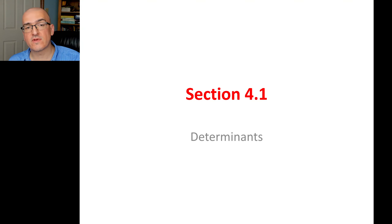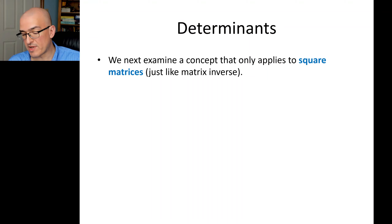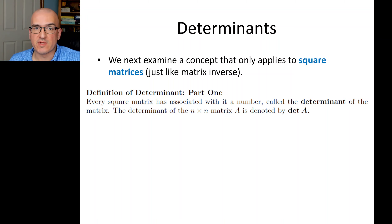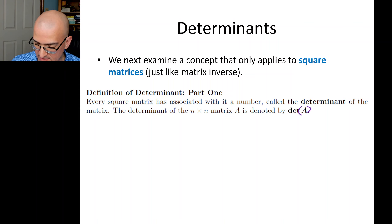Welcome back to Mathematics 1229. This video is about a new property of matrices called the determinant of a matrix. A determinant is a quantity that will only be calculated for square matrices — a matrix where the number of rows is equal to the number of columns. This is similar to matrix inverse. Every square matrix has a determinant. The notation we use is det A, often written with brackets around it.